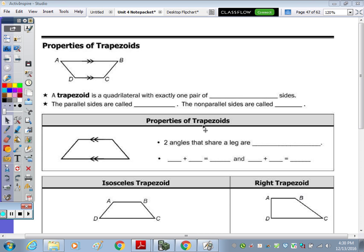Okay, today we're going to learn about the trapezoid. And the trapezoid is the last member of our quadrilateral family. So at the top of the page, our first star says a trapezoid is a quadrilateral with exactly one pair of parallel sides. So it only has one.